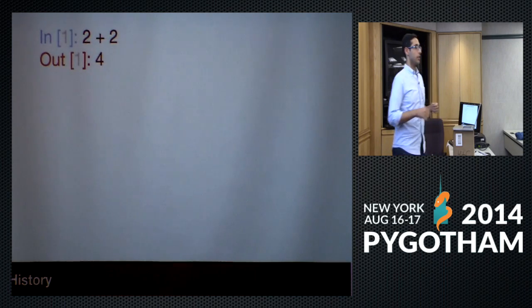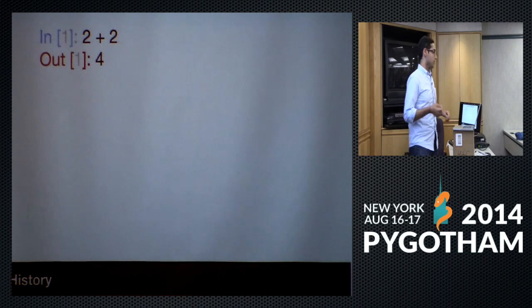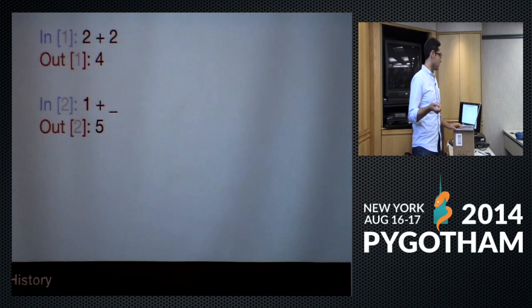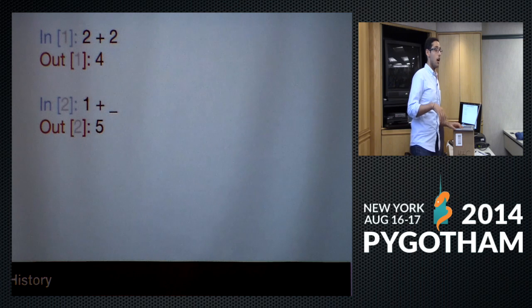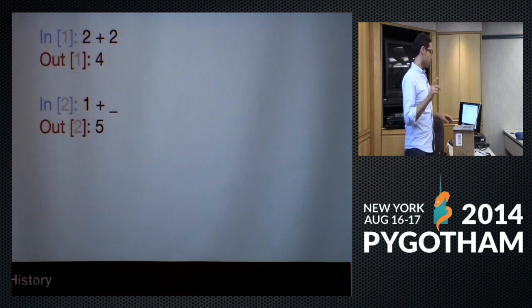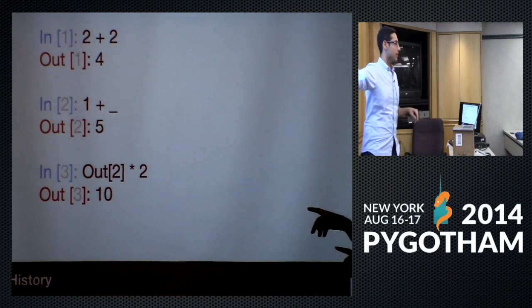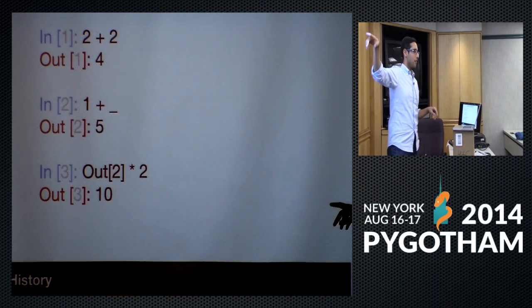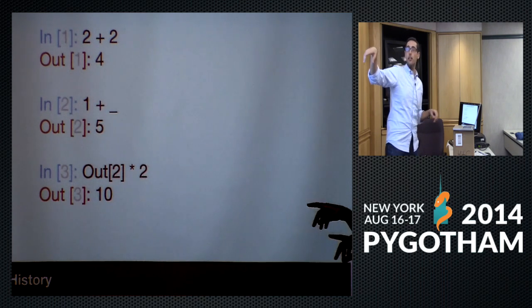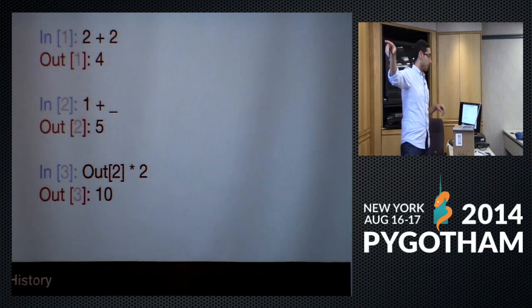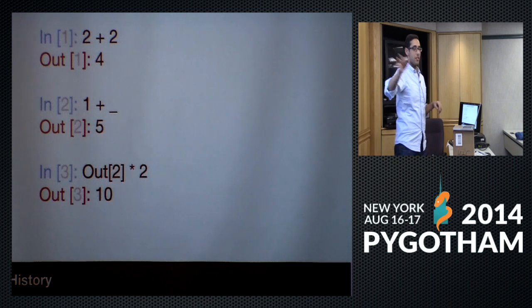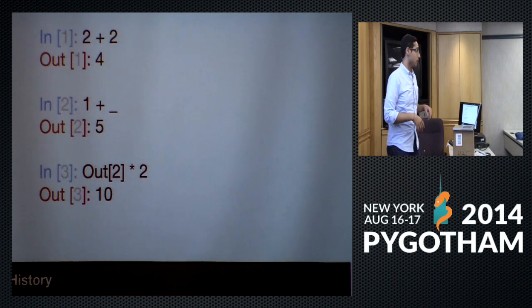Another thing IPython is really good at is history. It has powerful history features the normal Python interpreter does not. There's the underscore, which goes back one result — the normal Python interpreter has this — and double underscore, which goes back two. But the really cool thing is that every single thing entered in or coming out of an interpreter session is accessible in a hash. You can access anything by doing `out` or `in` with a number, so you don't have to redo calculations.